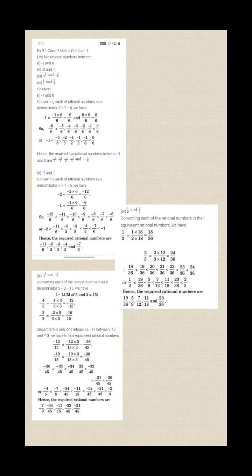Write 5 rational numbers between minus 1 and 0. First of all, what is a rational number? A rational number is of the form P by Q.